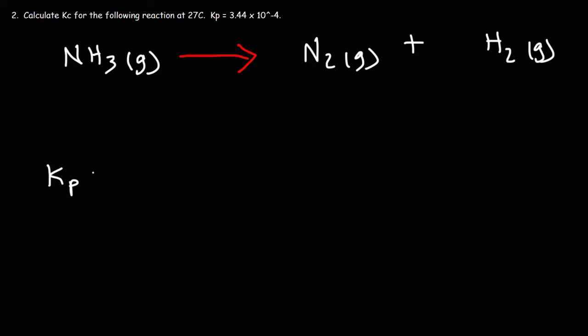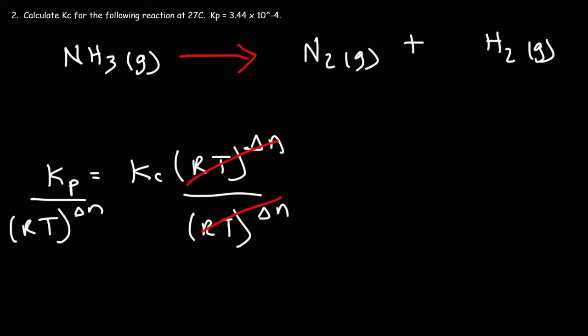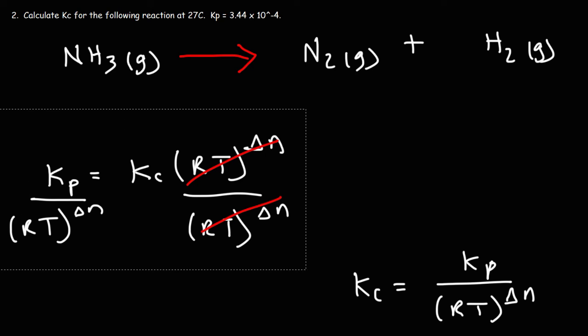So going back to our original formula, we know that Kp is equal to Kc times RT raised to the delta N. Well, in this example, we want to calculate Kc. So we need to rearrange this equation. If we divide both sides by RT raised to the delta N, we can get the formula for Kc. Kc is equal to Kp divided by RT raised to the delta N. So that is the formula we're going to use in this problem.